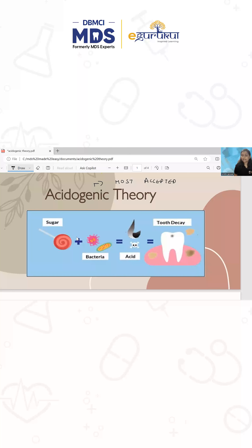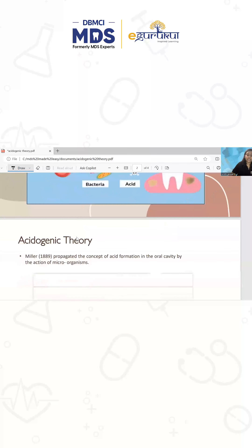It is the most accepted theory of dental caries till date — Miller's chemico-parasitic theory, also called the acidogenic theory. It has three components: carbohydrates, when bacteria act on these carbohydrates resulting in the formation of acid, and this acid causes demineralization of the tooth structure resulting in dental caries.